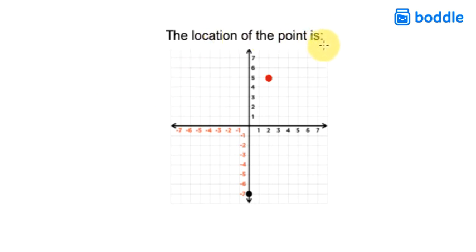The location of the point is. So in working with coordinate grids, we want to go from the middle to either the right or the left first.